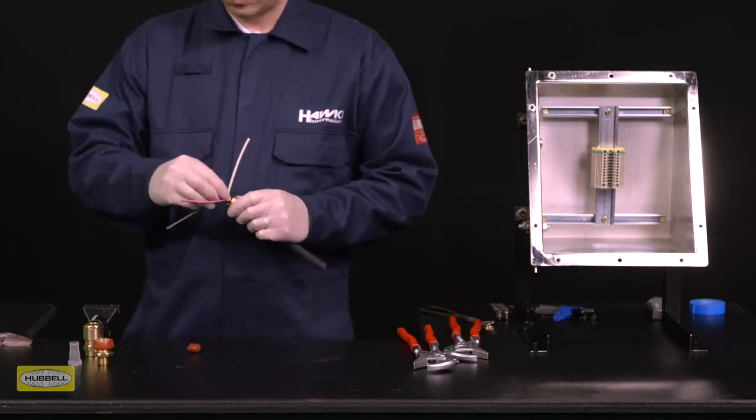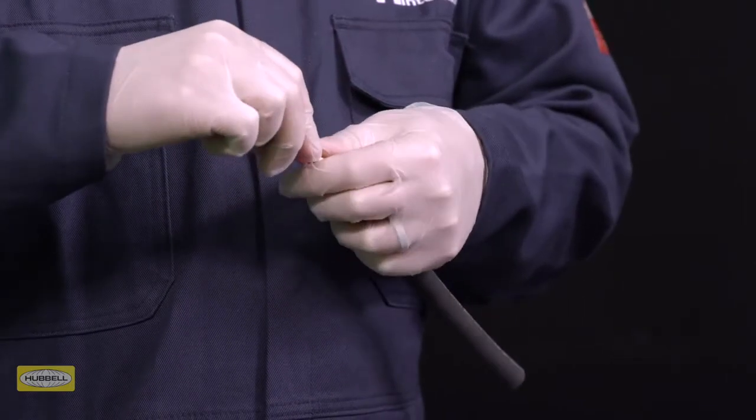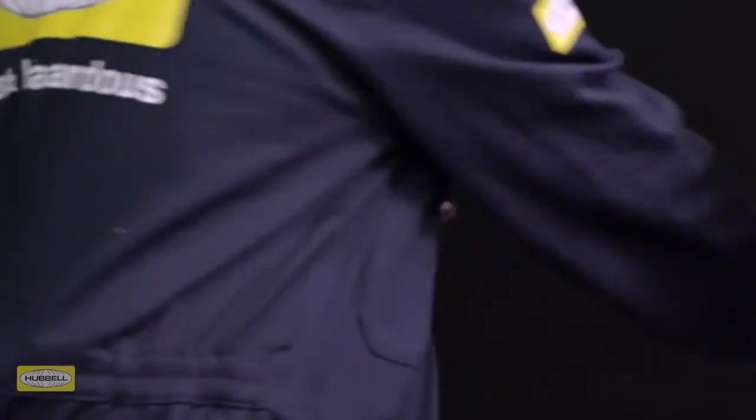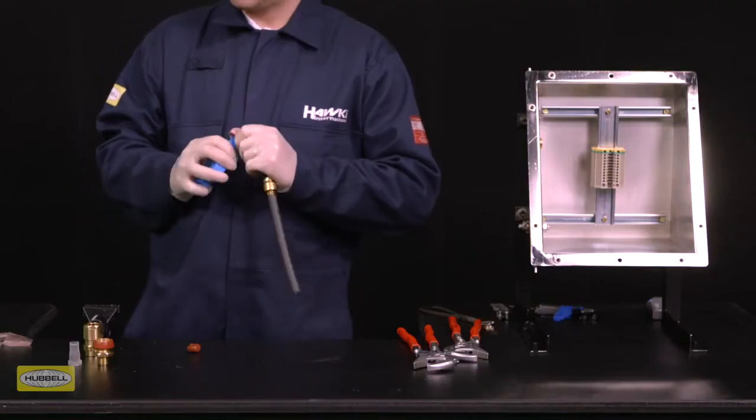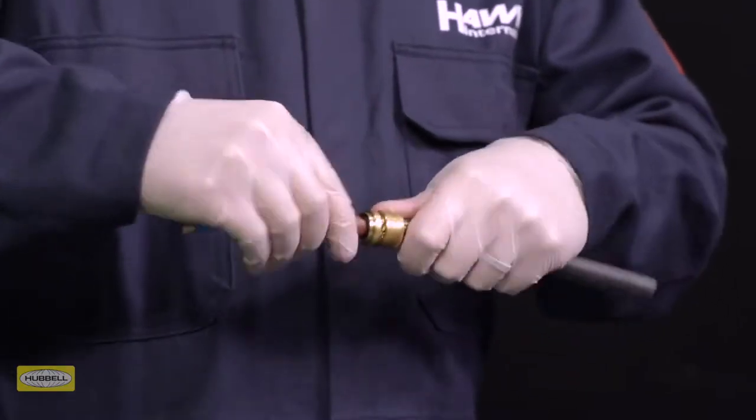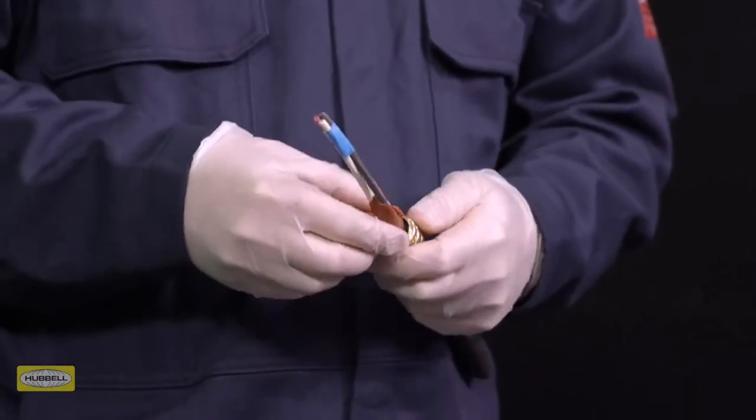Spread the cable cores and pack the compound between the cores. A cylindrical shape is the best way to ensure that the compound is effectively packed between the cores. Once all the gaps and voids have been filled, bring the conductors back together. Tape the conductors together to prevent disturbance of the compound seal whilst packing.